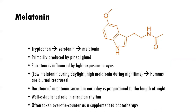Melatonin is a related cousin of serotonin. You're probably familiar with melatonin because of its role in sleep regulation. It is produced primarily by the pineal gland, and secretion is influenced by light exposure to the eyes — it helps us with the diurnal rhythm. When melatonin is low it's because of daylight; when it's high it's because of nighttime — it's produced during darkness and helps us get prepared for sleep. The duration of melatonin secretion each day is proportional to the length of night. People who go to places like Iceland have great difficulty sleeping in summers there because there's hardly any darkness and their body isn't producing much melatonin. It has a well-established role in circadian rhythm and can be taken over the counter as a supplement to assist with going to sleep.